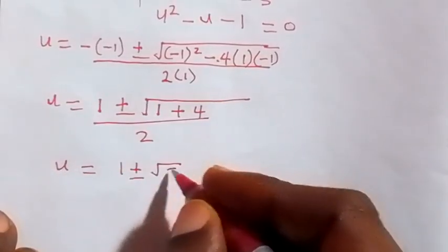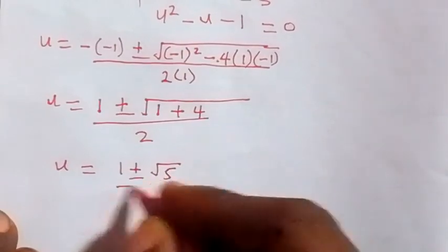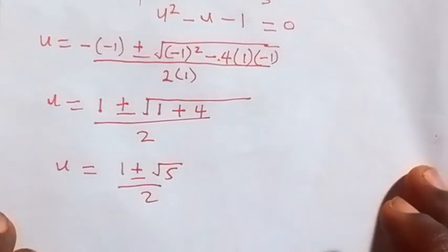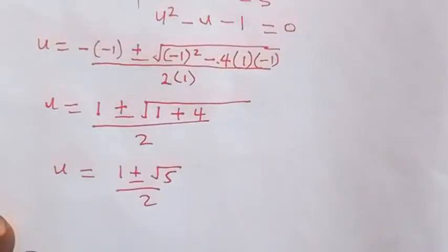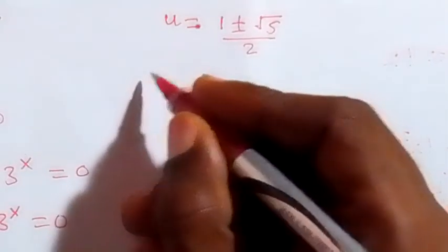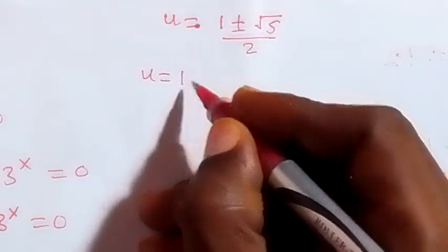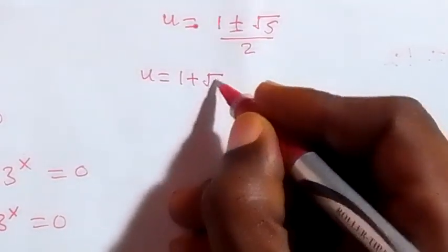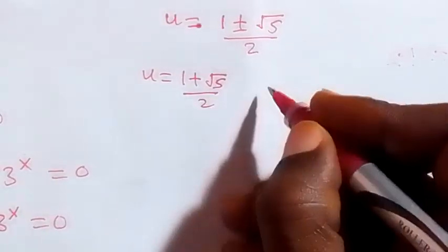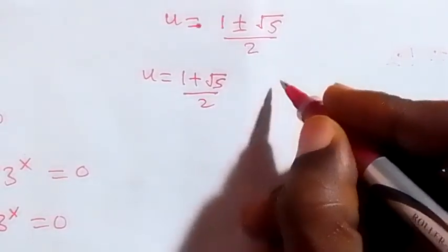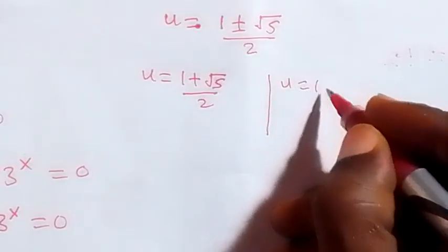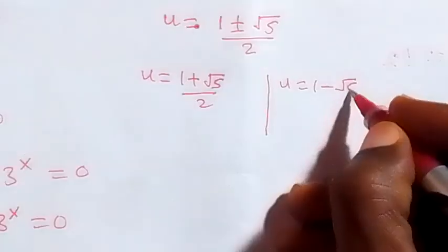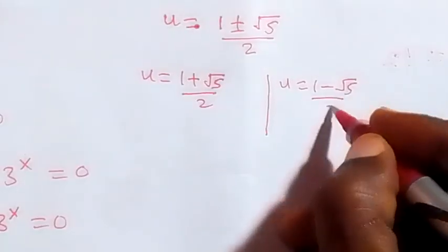So we have u equals to 1 plus or minus square root of 5, over 2. From there we have two possible values of u: u equals to (1 plus root 5) over 2, and also u equals to (1 minus root 5) over 2.